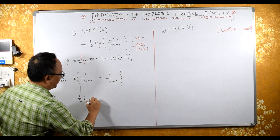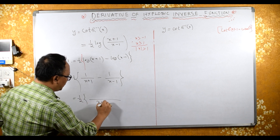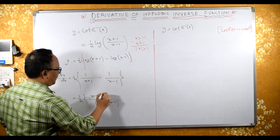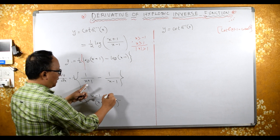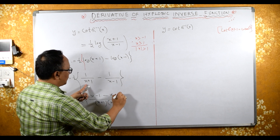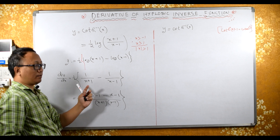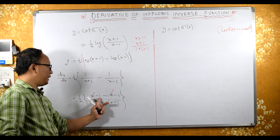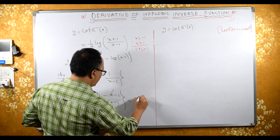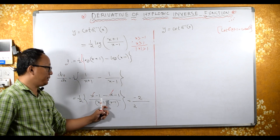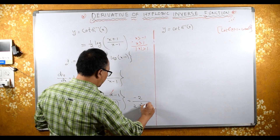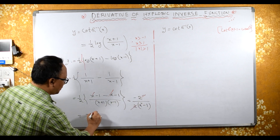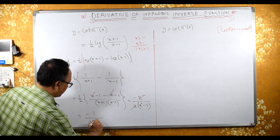Now we have half times 1/(x+1) minus 1/(x−1). Taking LCM, the numerator becomes x minus 1 minus (x plus 1), which gives minus x plus x cancels, and minus 1 minus 1 equals minus 2. So we have minus 2 upon 2 times x minus 1 into x plus 1, which is x squared minus 1 using the identity (a−b)(a+b) = a²−b². The 2's cancel, giving minus 1 upon x squared minus 1.